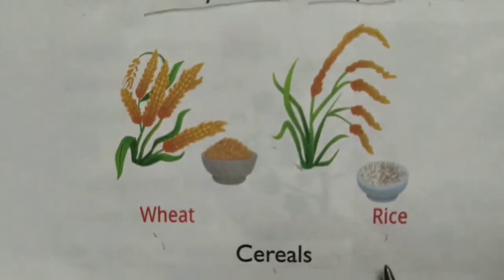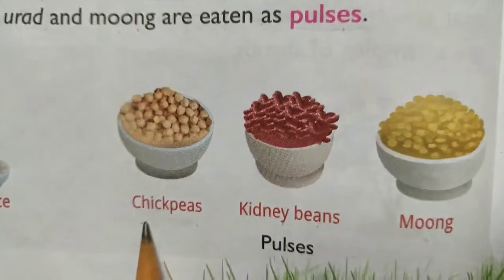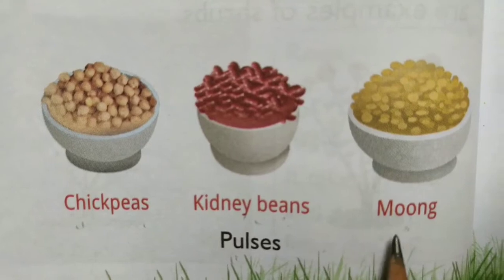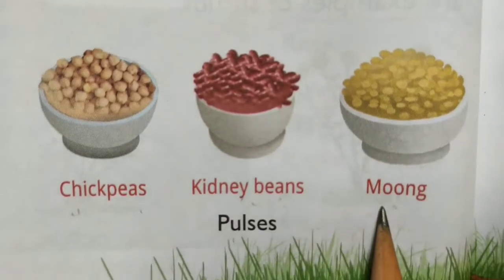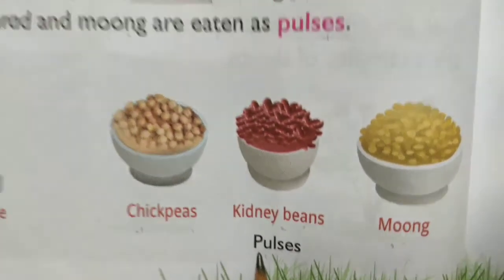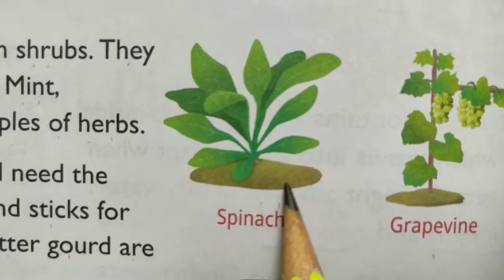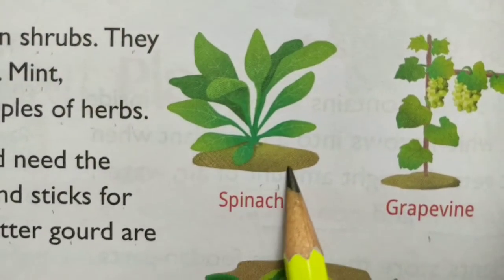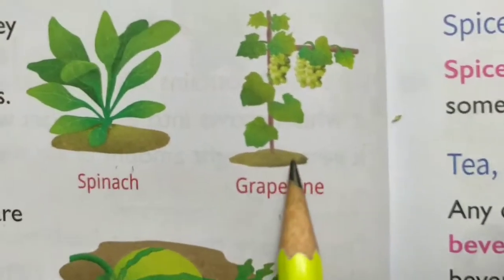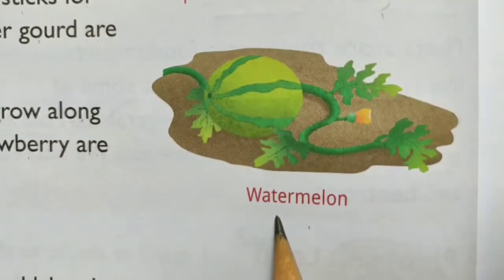Wheat and rice are cereals. Chickpeas, kidney beans and moong are pulses. This is the picture of spinach, grapevine and watermelon.